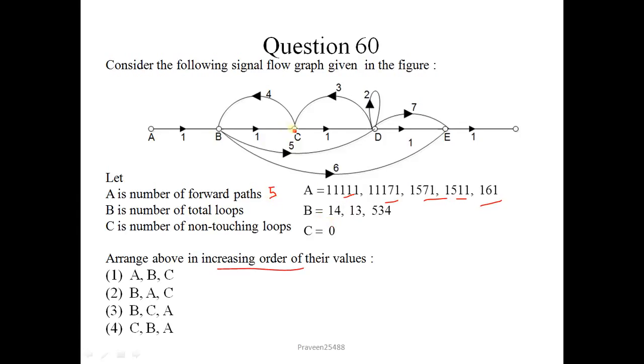And loops, there is 1 and 4, 1, 3. This is self-loop which is omitted here. And another one is 5, 3, 4. So there are 3 loops. C is the number of non-touching loops. There is no non-touching loops. These 1, 3 and 1, 4 are touching to each other. So increasing order of ABC is CBA. Correct option is 4.